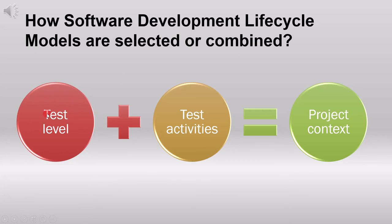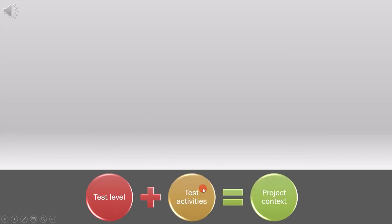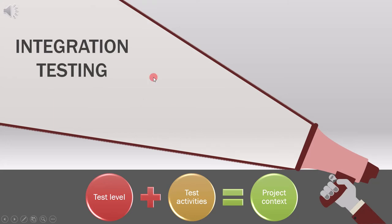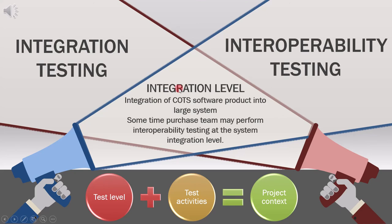First, we will see how test level is combined with test activities to achieve project context. The first example combines test level and test activities to achieve product context. Suppose we have to do integration testing for a test level and our testing activity is inter-operability testing. We want to combine the two to achieve our project context.